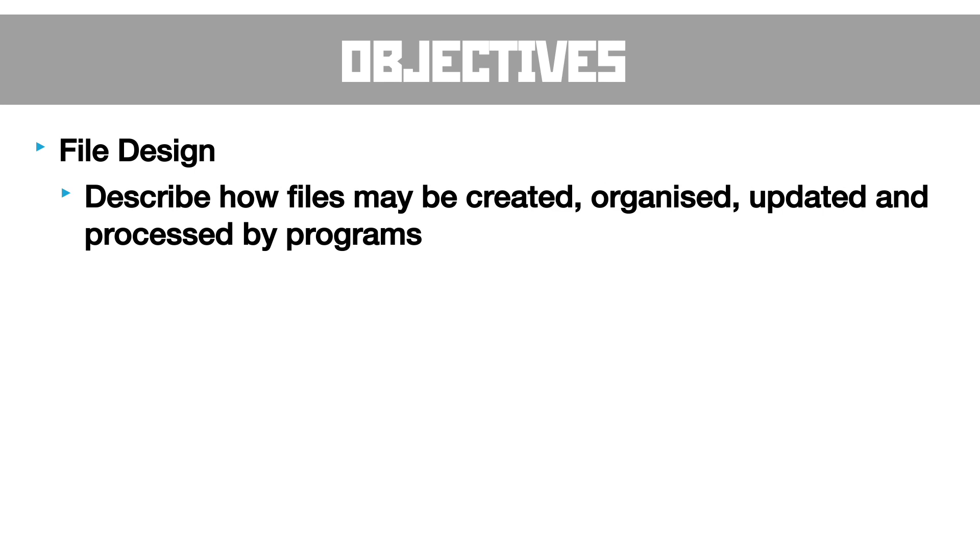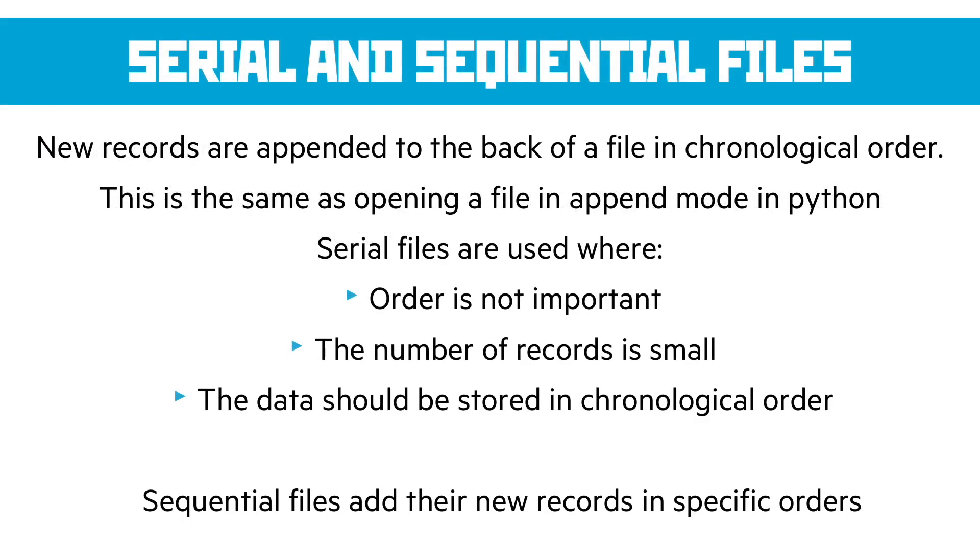First of all there's a big difference between a serial and a sequential file. A serial file is what happens when we just add new records to the back of a file and that's normally what happens in the majority of data systems you've built already. And if you're using Python and you open a file in the append mode with the A flag turned on this is an exact serial file.